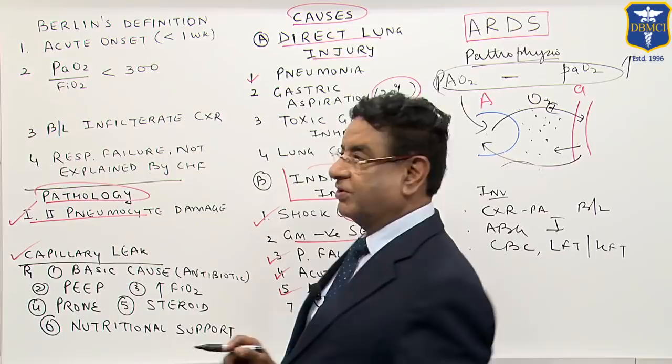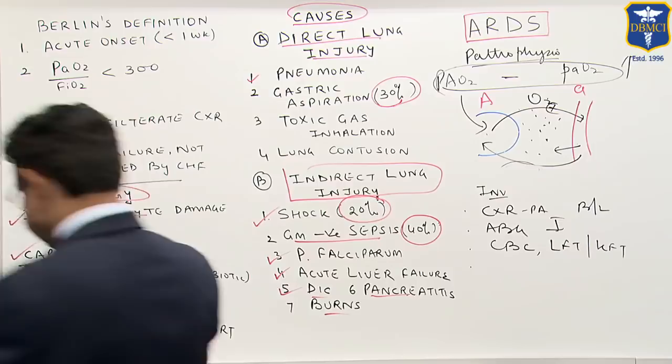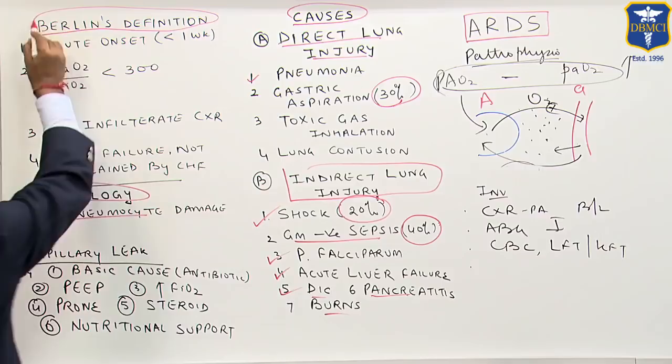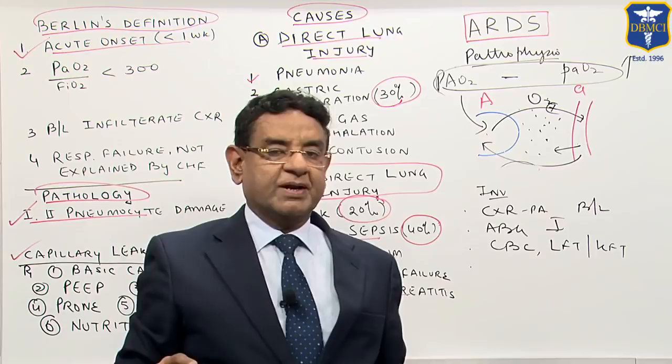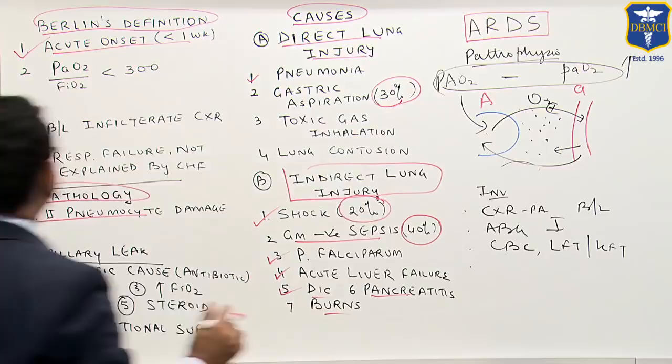How do we diagnose a case of ARDS? We have Berlin's definition. It says to diagnose a case of ARDS it has to be acute onset within one week, but remember 50 percent of patients manifest within the first 24 hours.